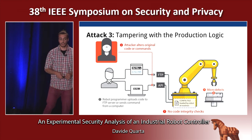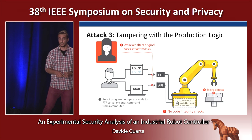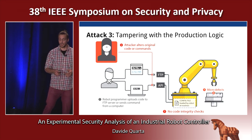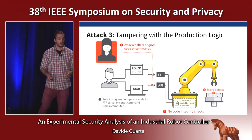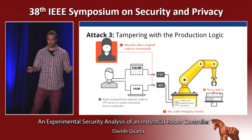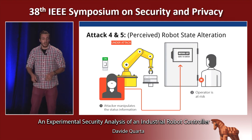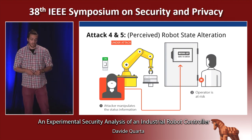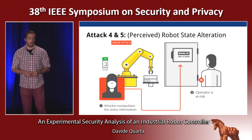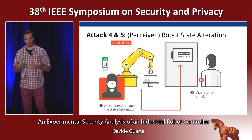The third attack is tampering with production logic. As with configuration files, there are no integrity checks on the code running on the controller. An attacker can easily modify the production logic — either to introduce micro defects or to change the production entirely.